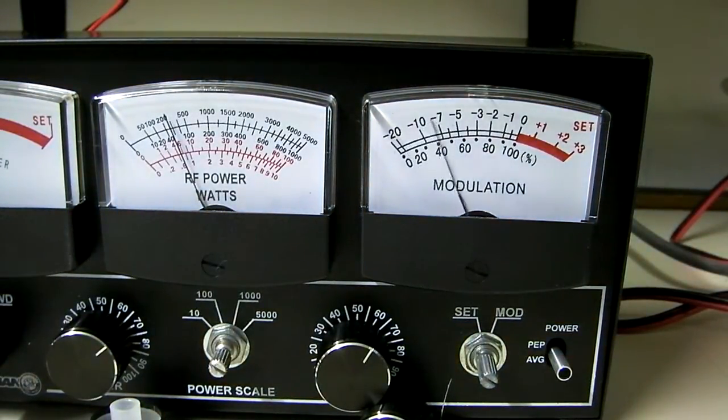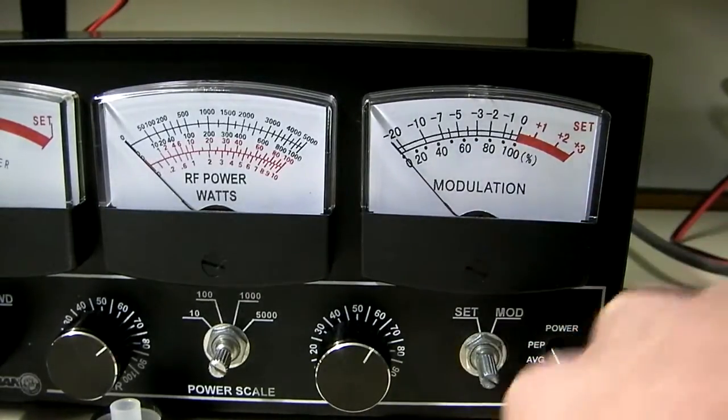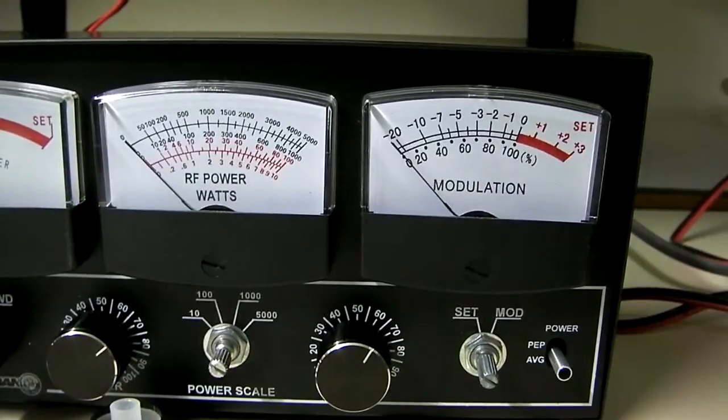Audio. So this is AM modulation. One, two, three. One, two, three. One, two, three. Audio. So you can see we're hitting 100% modulation, which is where we should be at. And modulation meter reads correct.